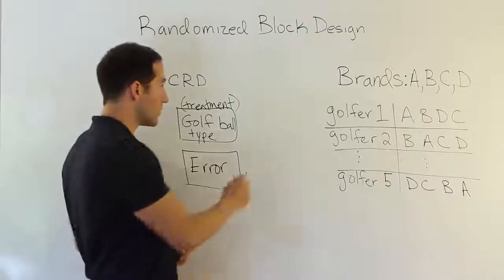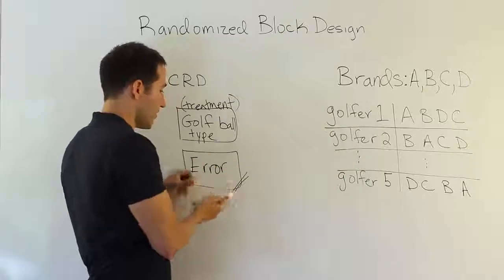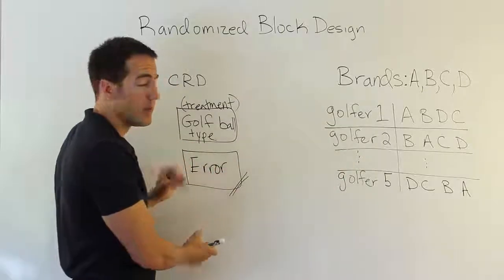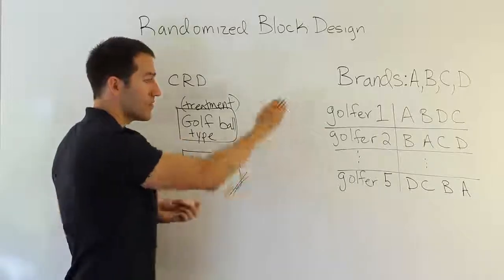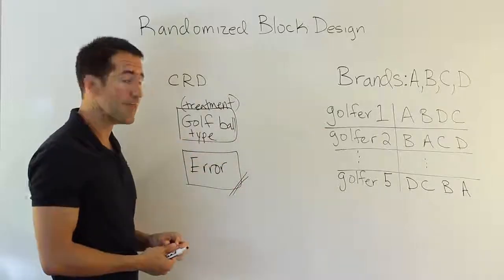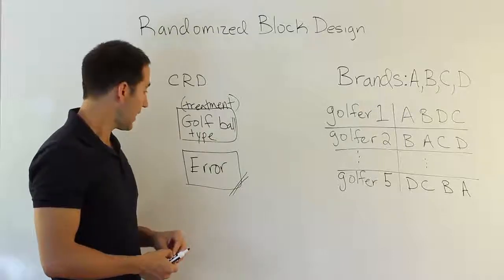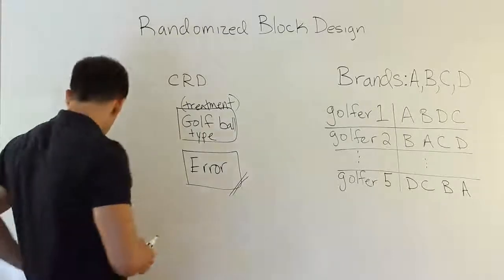However, if we could ignore the golfers' differences, we could strip it away from this error term, so that when we compare the error to the treatment effect, we're not including all those differences between the golfers. If we could do that, then we should get a better result. And that's essentially what we do in the randomized block design.